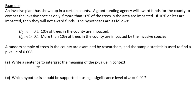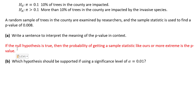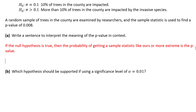When you're asked to do this, what you're being asked to do is take the definition of p-value and replace the words in that sentence with the exact values and context of this situation. Let's start with the exact definition of p-value: if the null hypothesis is true, then the probability of getting a sample statistic like ours or more extreme is the p-value. That's the definition — that's where you should always start. Now we're going to take all the words in this sentence and replace them with context and exact values.